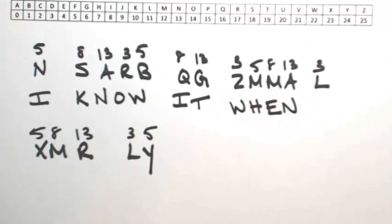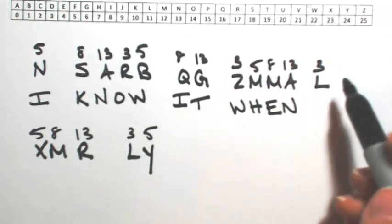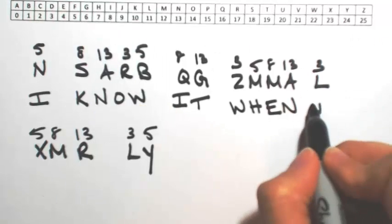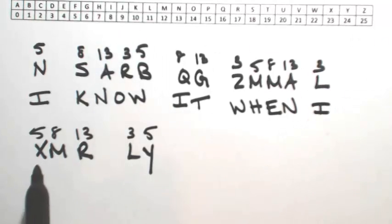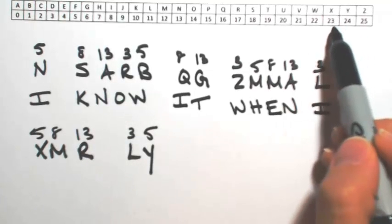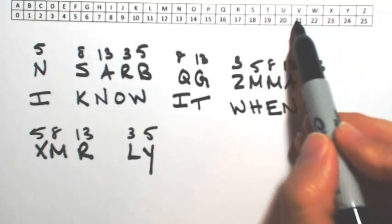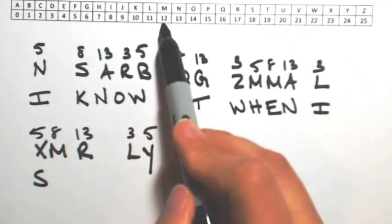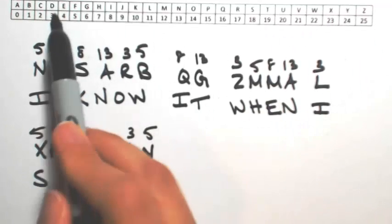Okay, again, that's a word that makes sense. L was shifted by 3, so 11 minus 3 is 8, so I know it when I... let's see what the rest is. X was shifted by 5, so back it up 5. So S. M was shifted by 8, so 12 minus 8 is 4, giving me an E.